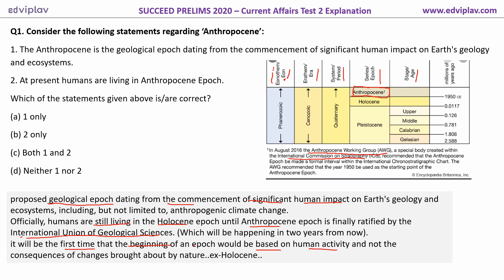Earlier epochs such as Quaternary, Cenozoic, Phanerozoic — for example, the Holocene — signify the end of the fourth glacial phase and the beginning of the fourth interglacial warm period. So Holocene is related to climatic events, that is changes brought by nature.